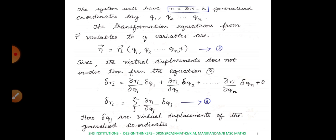In summation form, delta-ri equals summation j from 1 to n of (∂ri/∂qj) delta-qj — call this equation 3. Here delta-qj are the virtual displacements of the generalized coordinates.